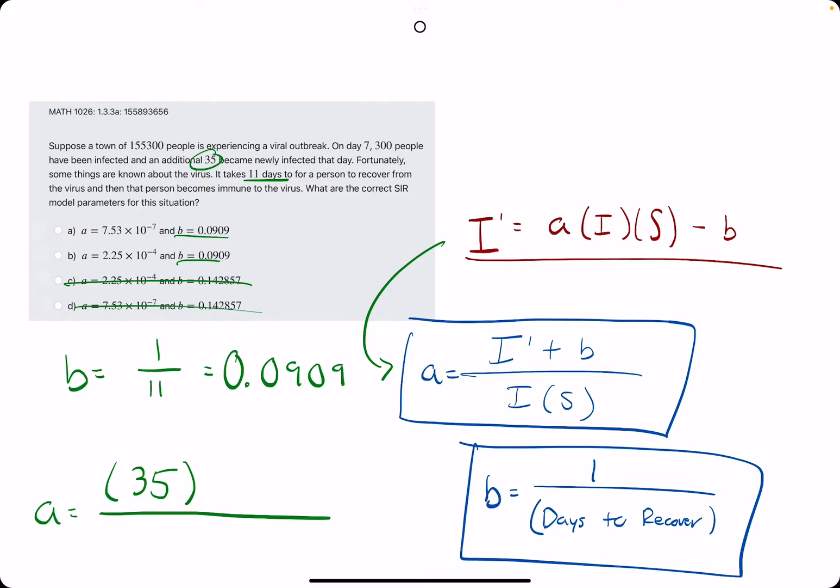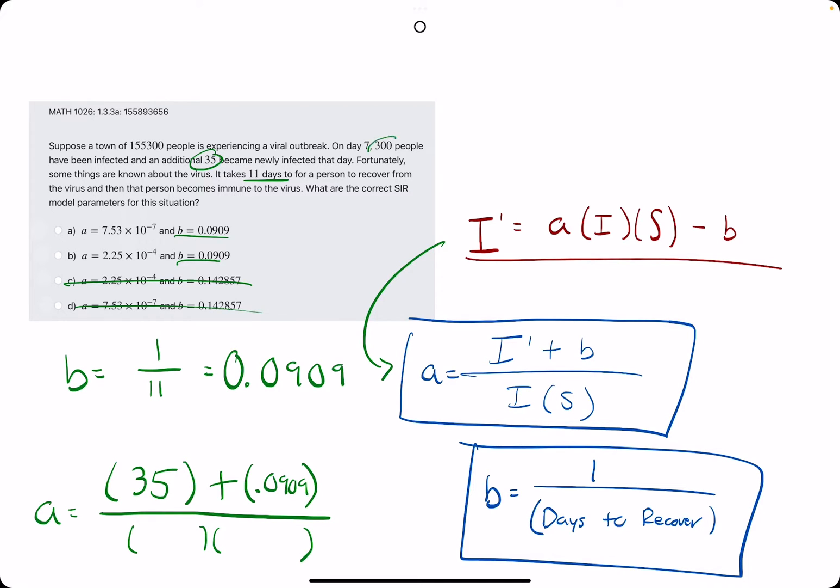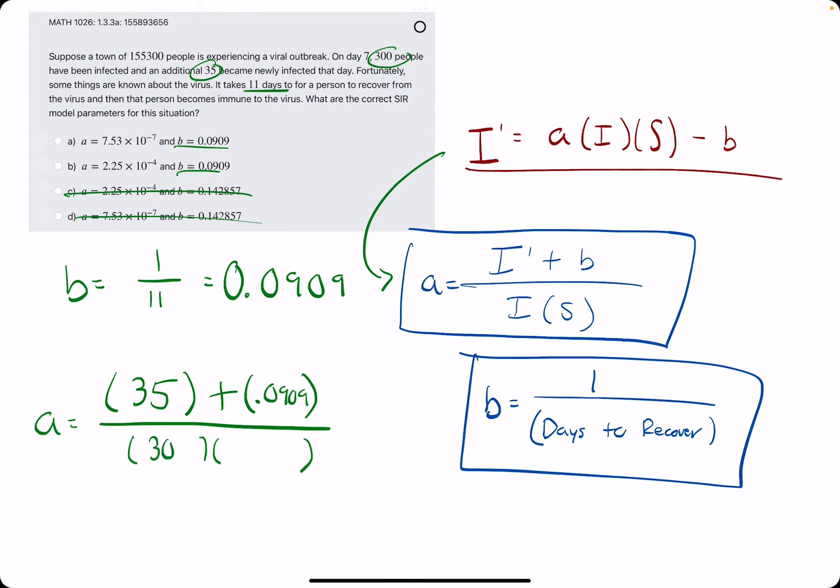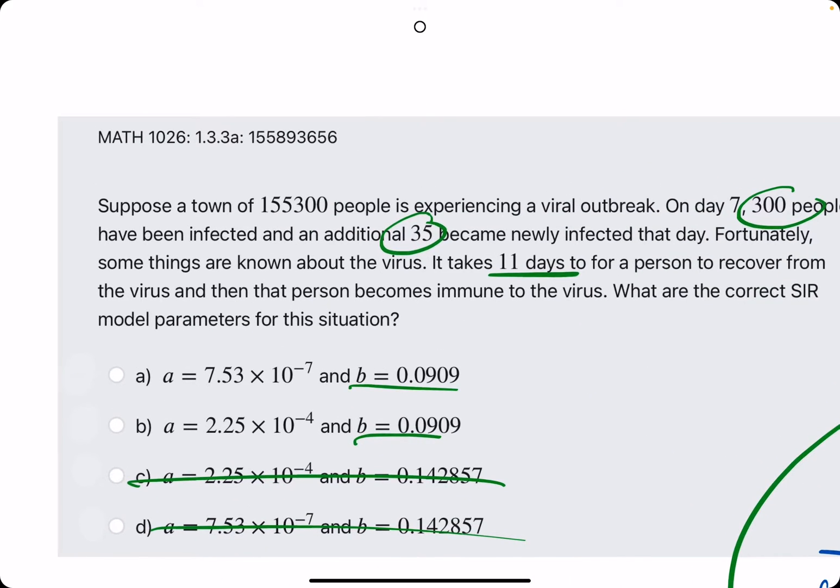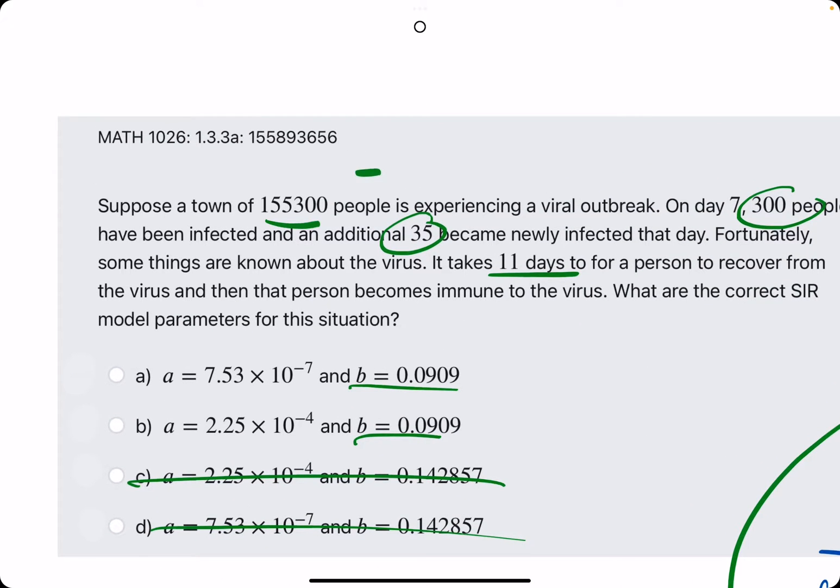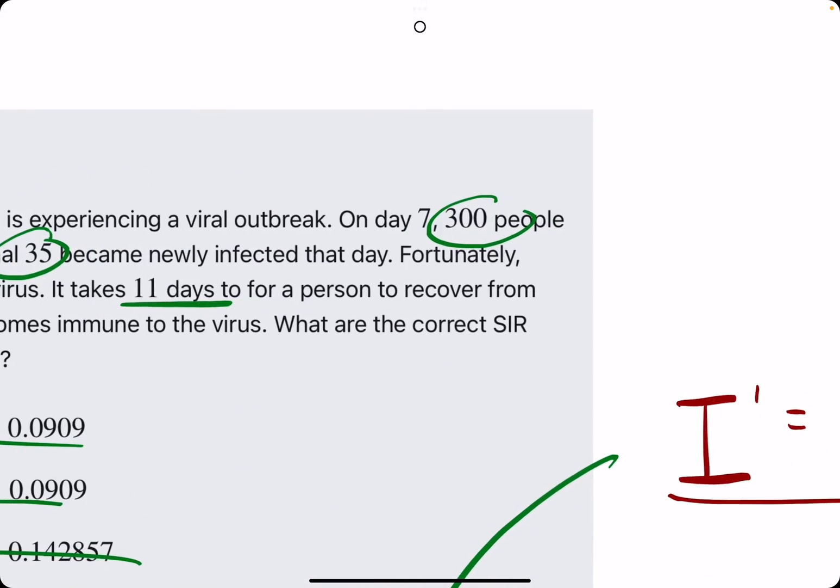All right, I have some technical difficulties here. All right, let's keep going. I' plus B, which we just calculated was 0.0909. In the denominator, we have the infected times the susceptible. So the infected on day seven is 300.